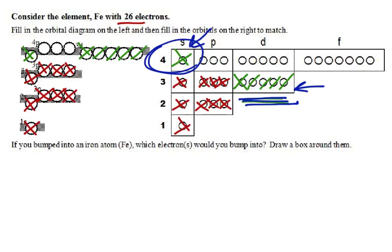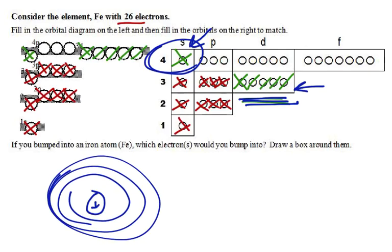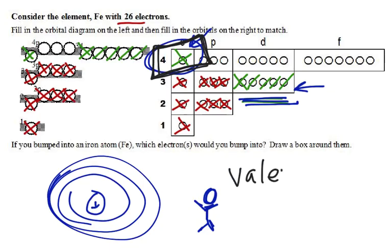If you were encountering this atom — knowing it has a nucleus with electrons going around it — which electrons would you bump into first? You'd bump into the 4th floor electrons before the others. Those outermost electrons have a name: valence electrons. Valence has to do with bonding — these are the electrons that will be involved in bonding, out in the outer shell. That's a quick overview of the Aufbau Principle and the Aufbau Hotel.